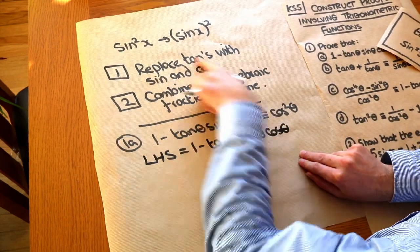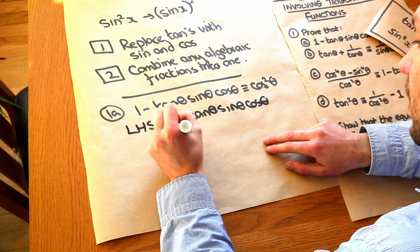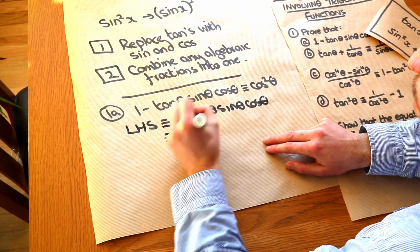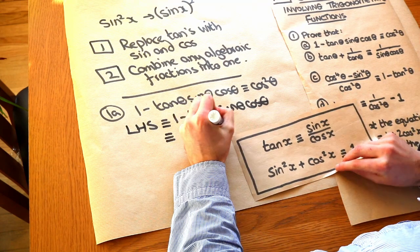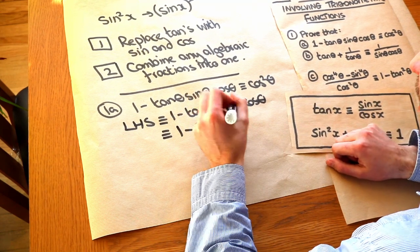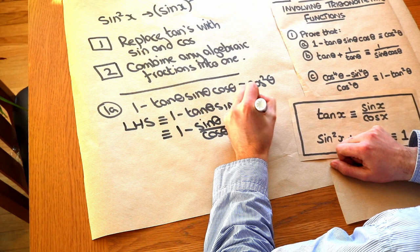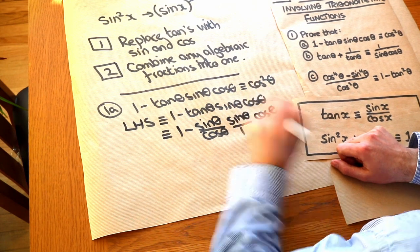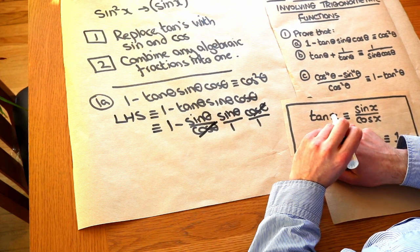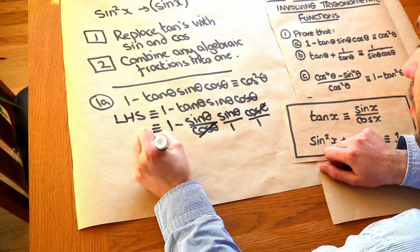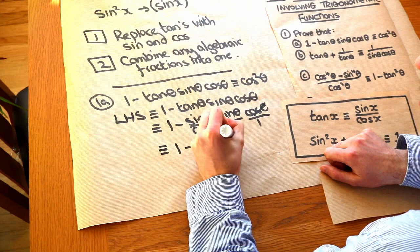As per tip 1, we want to replace any tans with sine and cos. So the left-hand side equals 1 minus — well, tan theta is sine of theta over cos of theta using this identity — times by sine of theta, times cos of theta over 1. Notice that this cos theta in the numerator and this cos theta in the denominator cancel, and that just leaves 1 minus sine of theta all squared, which we write as sine squared of theta.